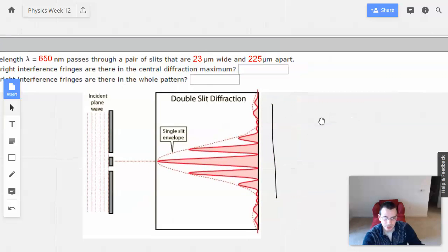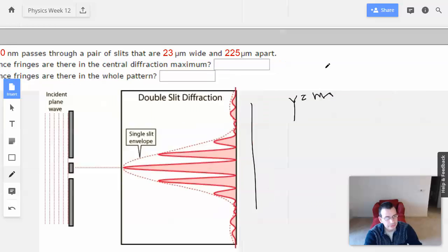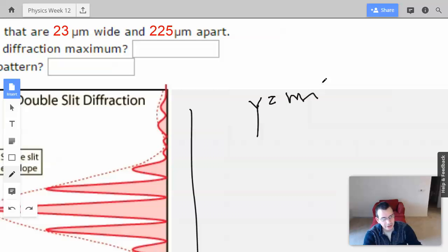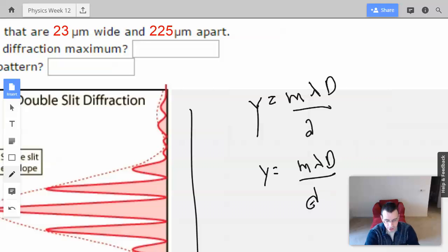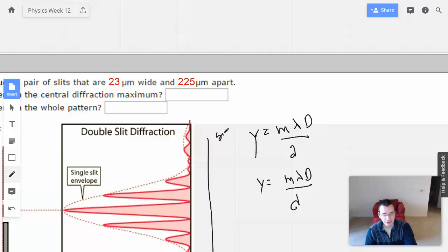So we're going to use our two formulas. We have, for the single slit, we're going to have y equals m lambda d over a, a for aperture. We have y equals m lambda d over separation between the slits for double slit. So this guy here will be single, this guy here will be double.